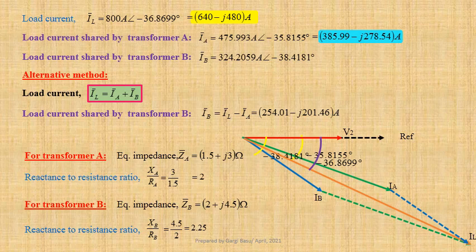This may be written in polar form as 324.2059 ampere at an angle minus 38.4181 degree. Let us now study the effect of equal reactance to resistance ratios of parallelly connected transformers on load sharing.